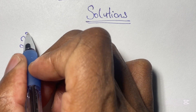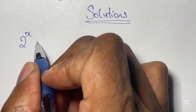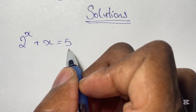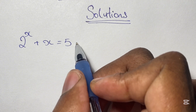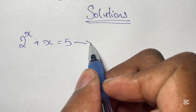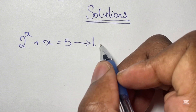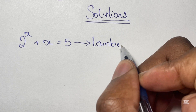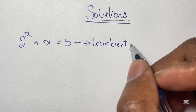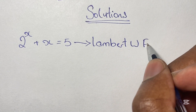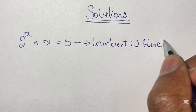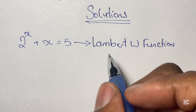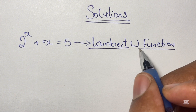Now moving on to solving our equation — we cannot solve this equation using normal algebraic methods. So what I'm going to do is introduce the method we're going to be using, which is the Lambert W function. This method is used to solve equations where the variable is in both the base and the exponent.